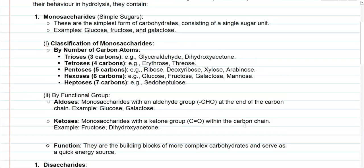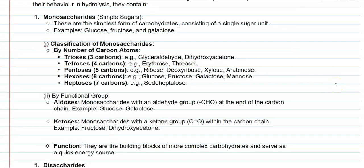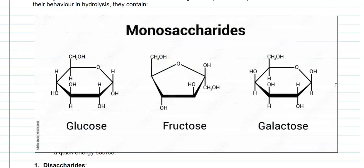We look at the points related to monosaccharides. The name implies that they are simple sugars — monosaccharides are the simplest form of carbohydrate. They consist of only a single sugar unit. Classical examples are glucose, fructose, and galactose.